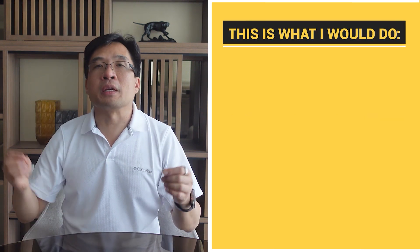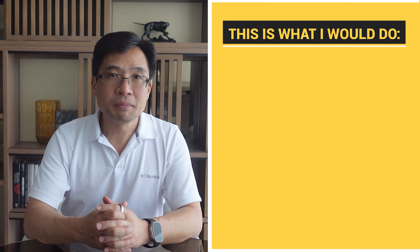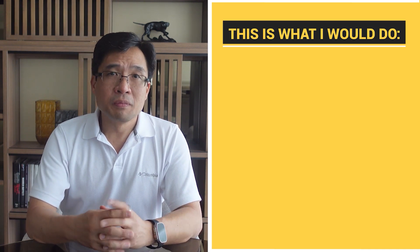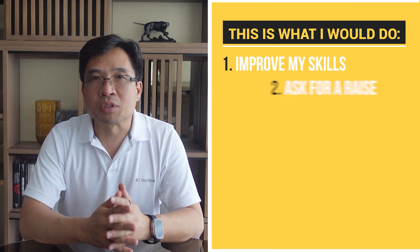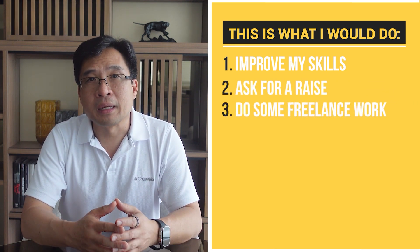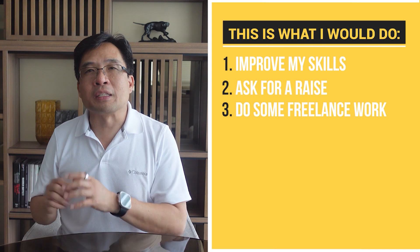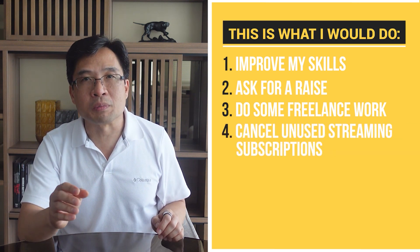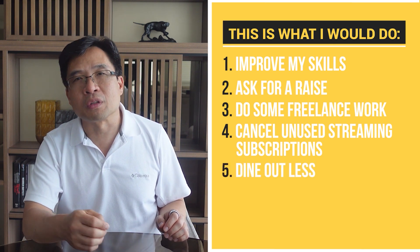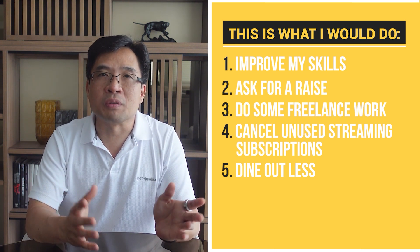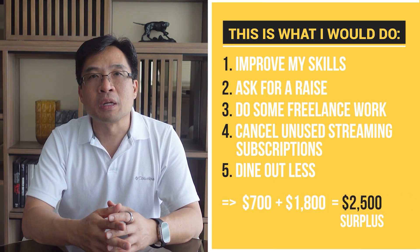Here's what I would do — this is me in my 20s. Let's say I'm a software engineer who wants to invest. I currently have $700 a month in surplus to invest, but I want more. To increase my positive cash flow, I would invest in improving my skill set, negotiate a 10% raise, and do some freelance work on the side — increasing my income by an additional $1,500 per month. At the same time, I'd cancel unused streaming subscriptions and dine out less, reducing expenses by about $300 per month. I now have an extra $1,800 per month, so with the original $700 plus $1,800, I have $2,500 per month to invest.